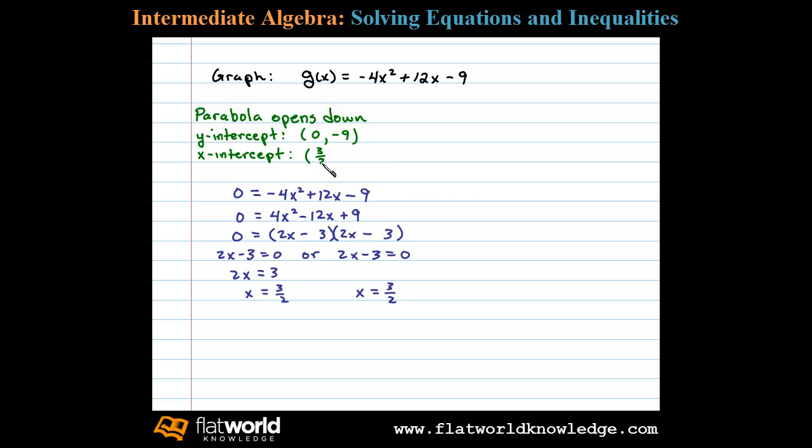So in other words we have a double root. That tells me there's only one x-intercept and that is at 3/2, comma 0. Once we determine the intercepts we then want to find the vertex.